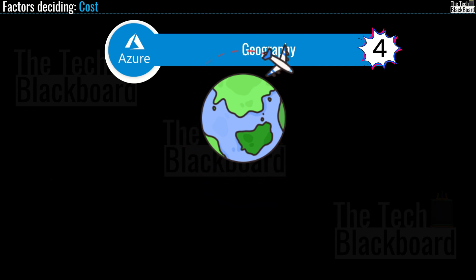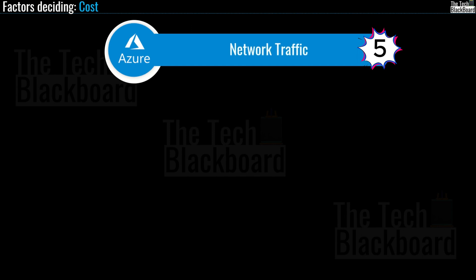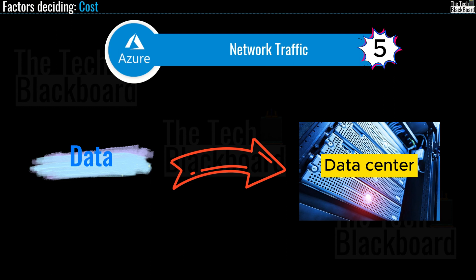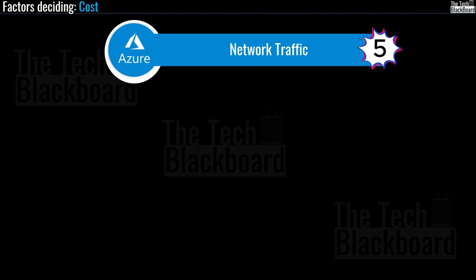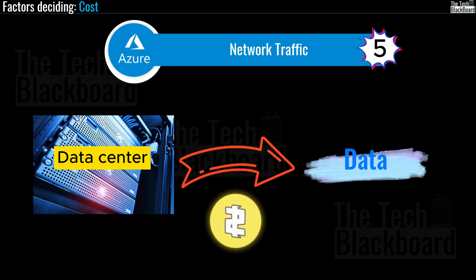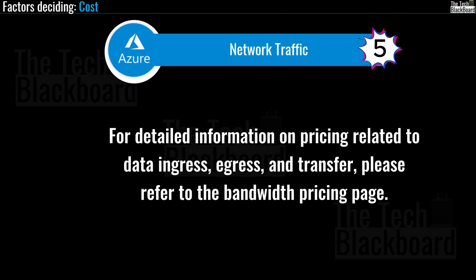Now let's talk about network traffic. Inbound data transfers — data going into Azure data centers — are typically free. But the cost of outbound data transfers — data leaving Azure data centers — is determined by your billing zone. A zone represents a geographic cluster of Azure regions grouped together for billing purposes. For detailed information on pricing related to data ingress (inbound) or data egress (outbound), please refer to the bandwidth pricing page from Microsoft Azure. You will likely get questions on this concept in the AZ-900 exam.